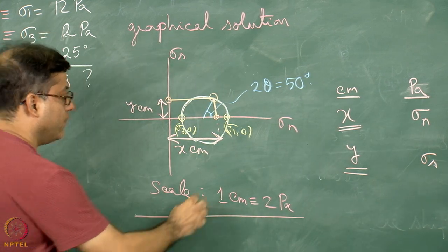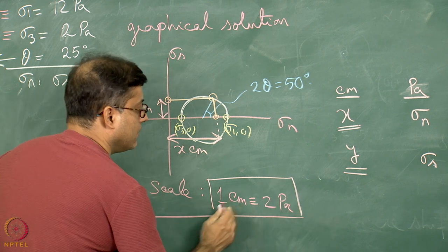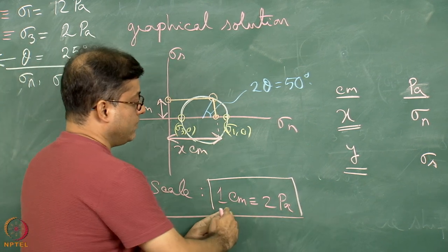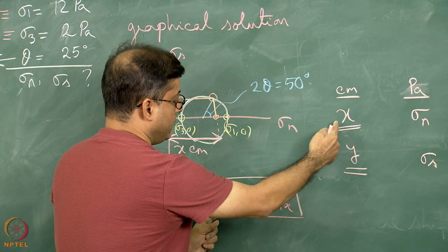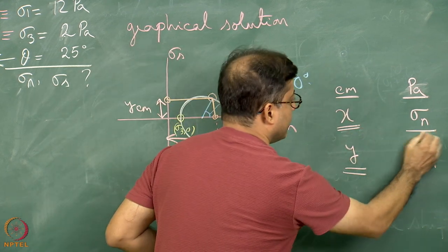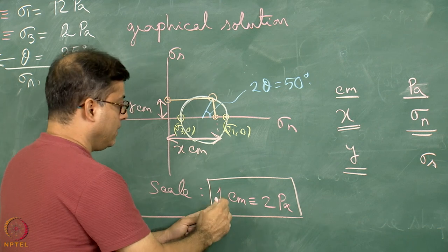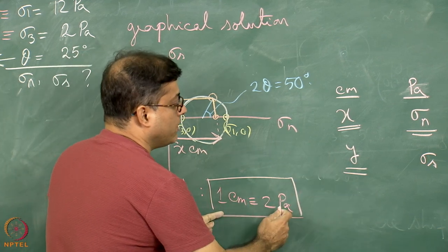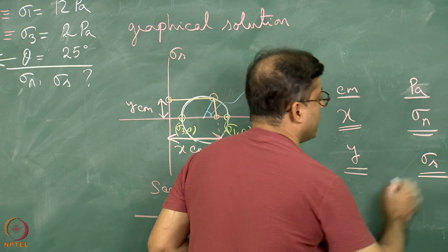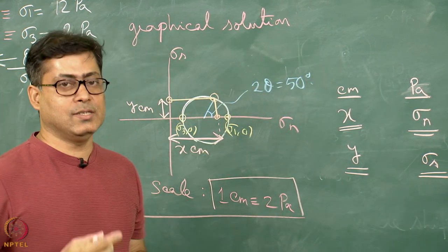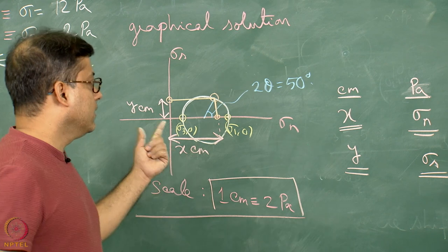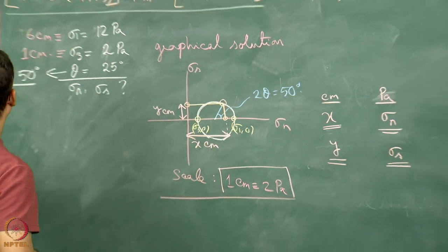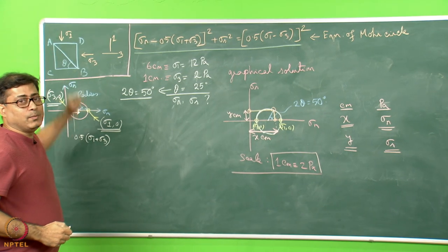These centimeter measurements have to be converted to Pascal following the scale we chose: 1 centimeter equals 2 Pascal. By arithmetic, if 1 cm = 2 Pascal, then x cm gives the sigma N value in Pascal, and y cm gives the sigma S value. In this way, without using a calculator, we have graphically obtained sigma N and sigma S acting on the AB plane.